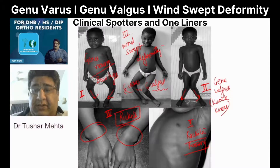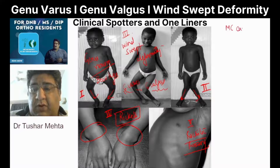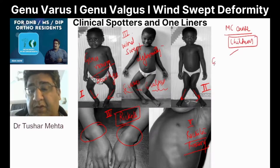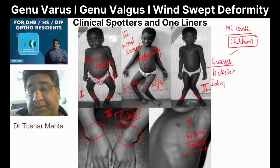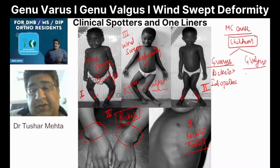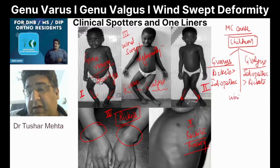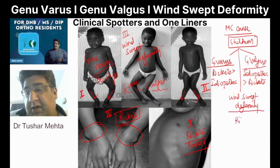The further leading question is pretty simple. They can ask you about the most common cause in children of genu varum — the answer is rickets, followed by idiopathic. Similarly, the most common cause of genu valgus in children is the opposite: idiopathic, followed by rickets. The most common cause of wind swept deformity in children is, of course, rickets.